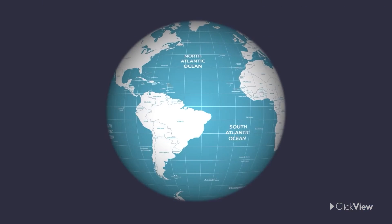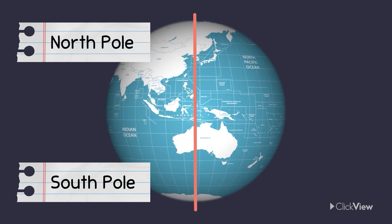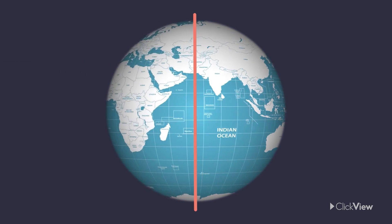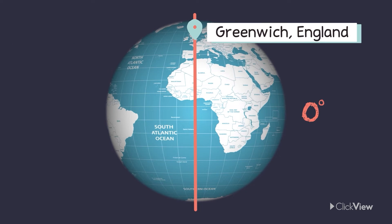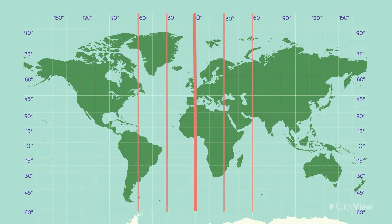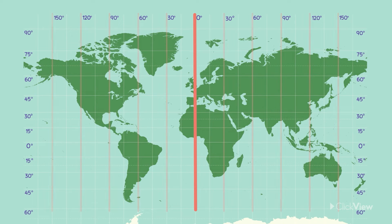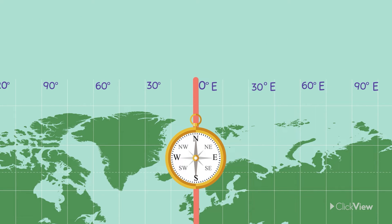Lines of longitude, or meridians, are imaginary lines that run vertically from the south pole to the north pole. The prime meridian is at zero degrees — it runs through Greenwich, England. These lines represent 30, 60, 90, 120, and 150 degrees east and west of the prime meridian. Lines of longitude show how far places sit east or west of the prime meridian, so we write an E for locations east of the prime meridian and a W for locations west of the prime meridian.